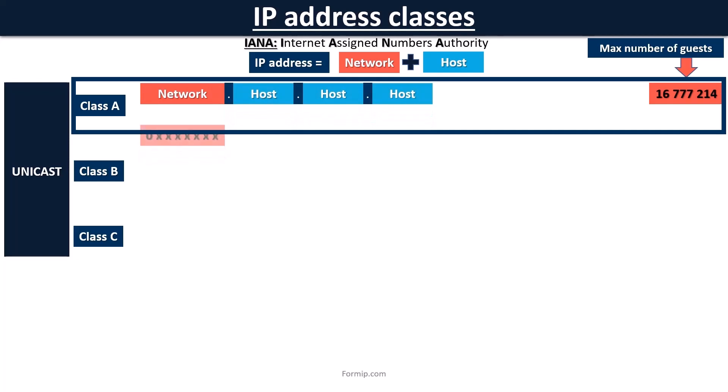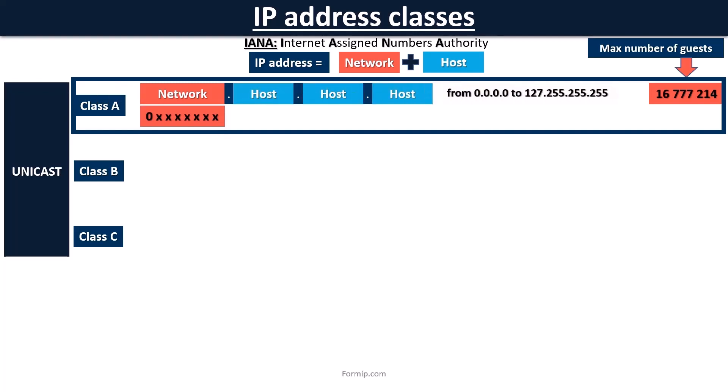The first bit of a class A address always begins with a 0, which gives us an IP range of 0 to 127. Small exception here: range 127 cannot be used as it is reserved for loopback addresses and for diagnostic purposes.